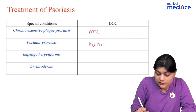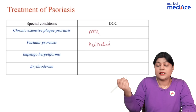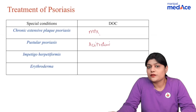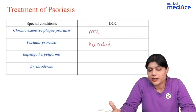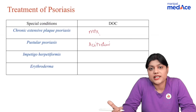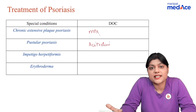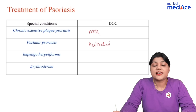For psoriasis, the drug of choice is acetretin. The side effects of acetretin — the most common side effect is dry lips. The patient can also have hepatitis and hypertriglyceridemia.